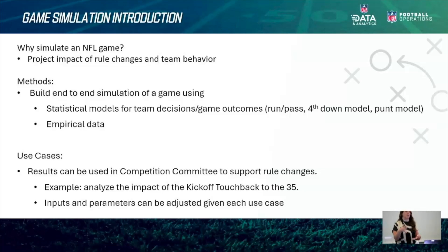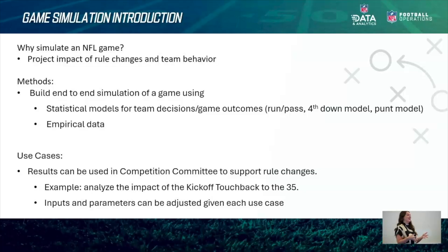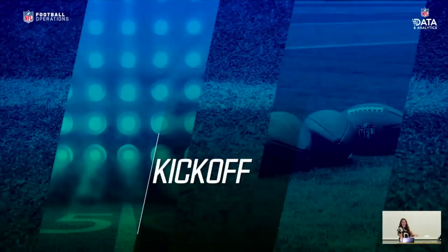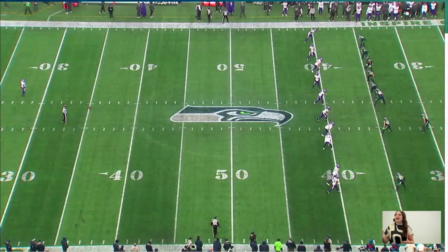We needed an end-to-end simulation model to show the impact of moving the kickoff touchback line, keeping everything else the same and changing just one parameter. We needed an ensemble of about three different types of models and various distributions to make this happen — simulating at the play level with artificial play-by-play data to generate new insights. At the NFL League office, we have only 272 regular season games starting in 2021, so we must generate simulated versions of what a real game looks like. We also watch a lot of film to make sure we understand what's happening in the data.